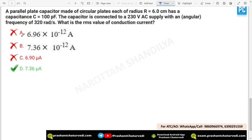Next question. A parallel plate capacitor made of circular plates, each of radius R equal to 6 centimeter, has a capacitance of this. Every parallel plate has radius this much. Capacitance has been mentioned. The capacitor is connected to supply with a frequency of this. What will be the RMS value of the conduction current?